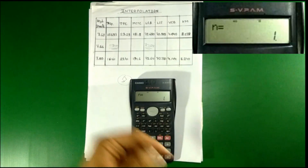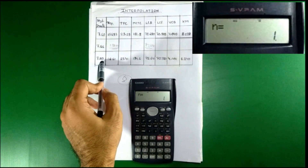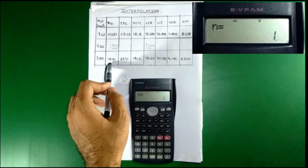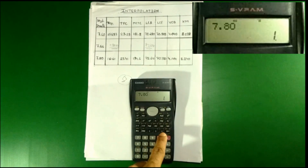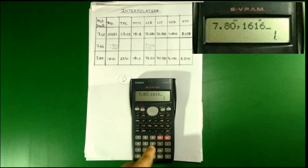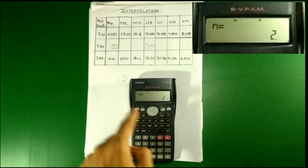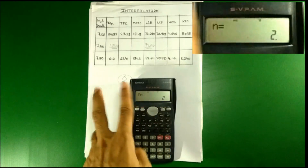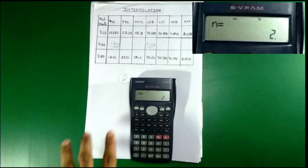Now enter the second value: draft 7.80 with displacement 16161. Press 7.80, then comma, then 16161, and press M+ again. Now N equals 2, which means the second value is also saved.